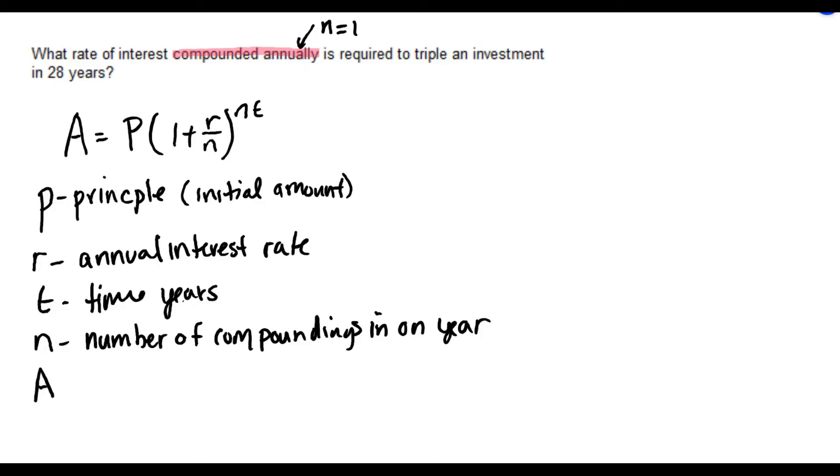And then finally we have A. A is our accrued amount or our ending amount, the amount after a certain time period.